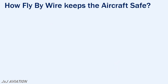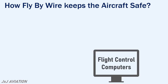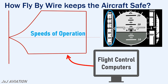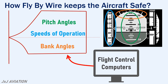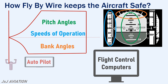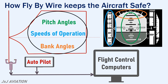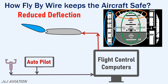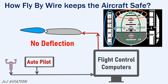How does the fly-by-wire system keep the aircraft safe? The flight computers are programmed with the safe operation envelope of the aircraft. This includes the maximum and minimum speeds of operation, the maximum positive and negative pitch angles, and the maximum bank angle. When the flight control computers receive information from the control stick or the autopilot, they will first calculate whether the aircraft will stay within its protected envelope or deviate out of it. If the computers determine that the manoeuvre will not be safe for the aircraft, the computers have the authority to reduce the angle of deflection or even prevent the deflection of the control surface to keep the aircraft safe.